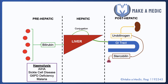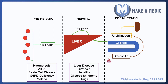For hepatic causes of jaundice, anything that impairs the function of the liver would cause hepatic jaundice. That includes cirrhosis, hepatitis, various medications, and also Gilbert's syndrome — a relatively common benign condition in which the liver's ability to conjugate bilirubin is compromised.